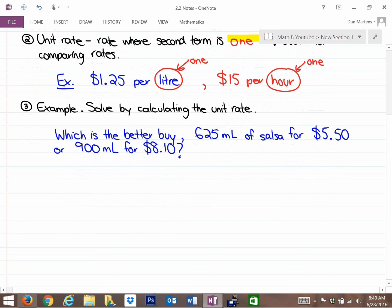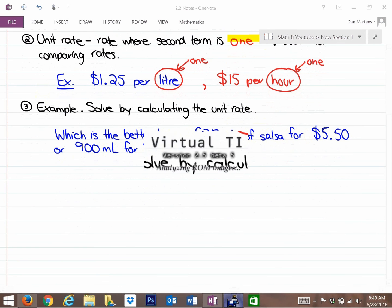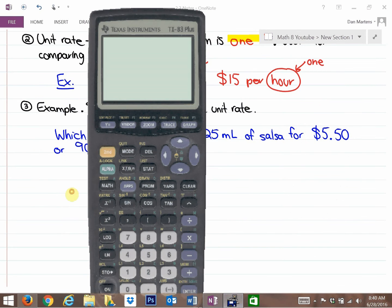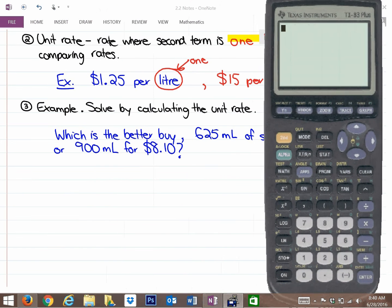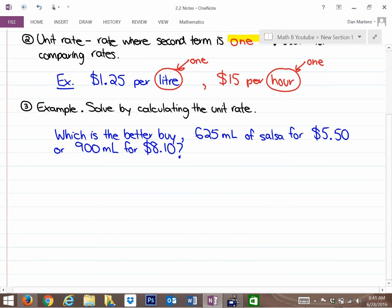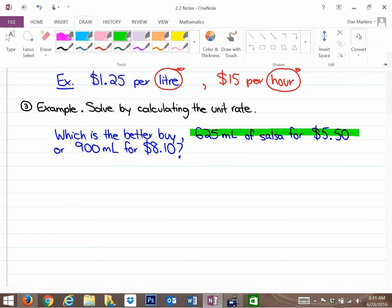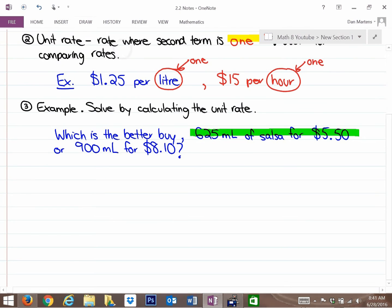There are a variety of ways to solve and show your mathematical thinking. I'm just going to show you one of many ways, and this is what I find tends to be the most direct way for understanding these problems. So if we have 625 milliliters of salsa for $5.50, this guy here that I'm highlighting in green, what we would like to do is find out how much money it costs per 1 milliliter.